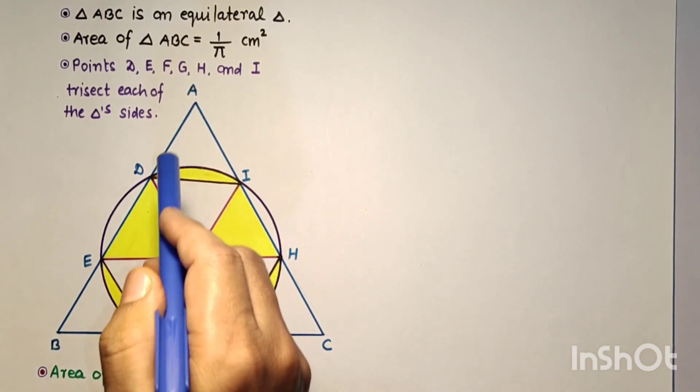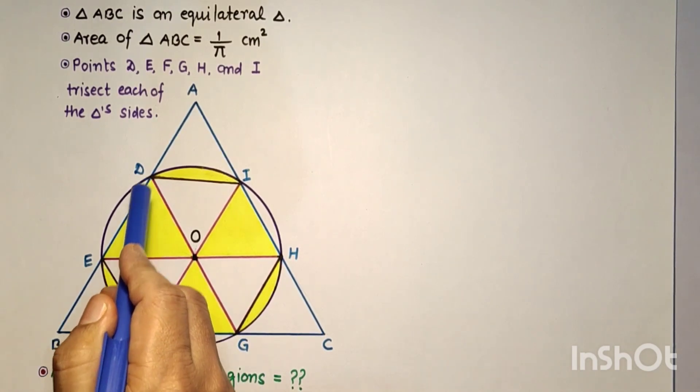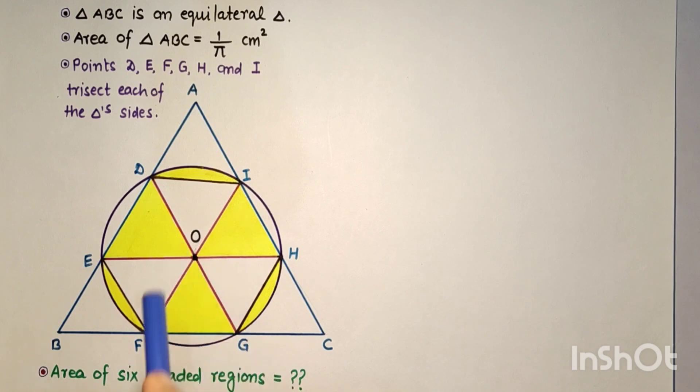whose area is given as 1/π cm², and points D, E, F, G, H, and I are points